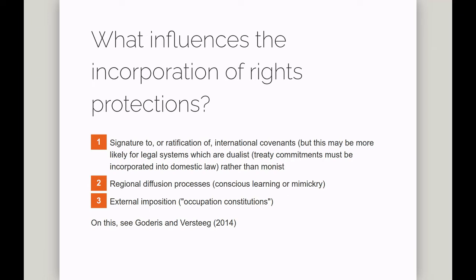This factor might be more important for countries with a dualist approach to international law — where there are two separate planes, the international and the domestic, and in order for something on the international plane to have effect domestically it has to be incorporated into domestic law, perhaps by ordinary legislation or by constitutional amendments. So international covenants might be one way that national constitutions acquire rights.